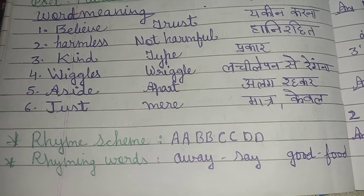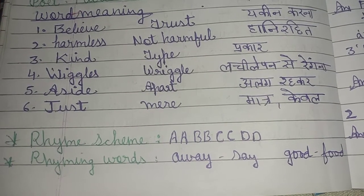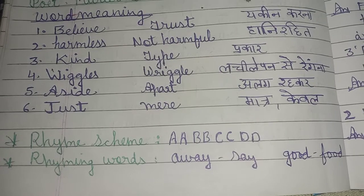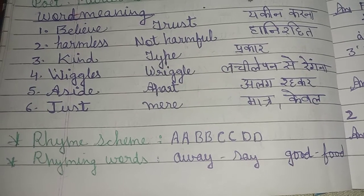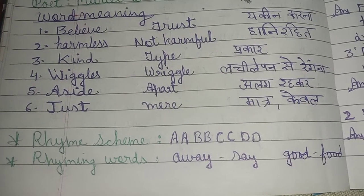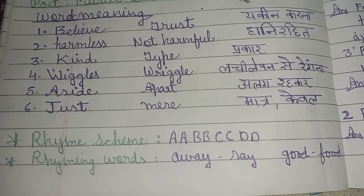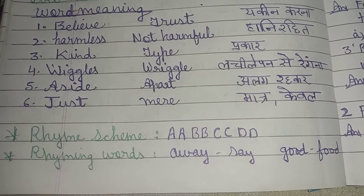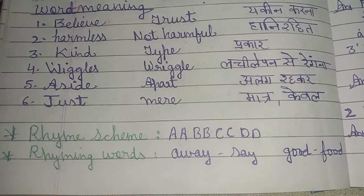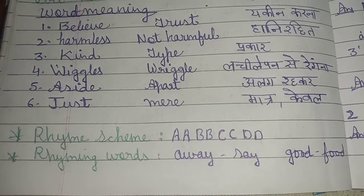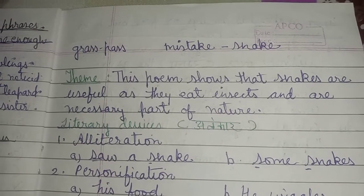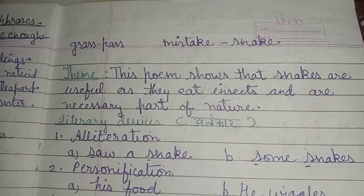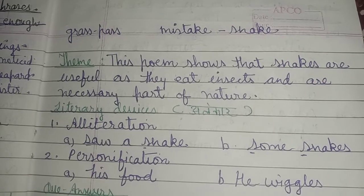Now we will talk about the rhyme scheme of the poem. The rhyme scheme is A-A, B-B, C-C, D-D. The rhyming words are: away and say, good and food, grass and pass, mistake and snake.